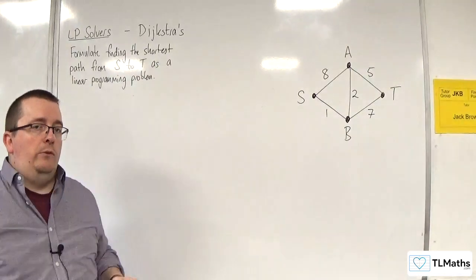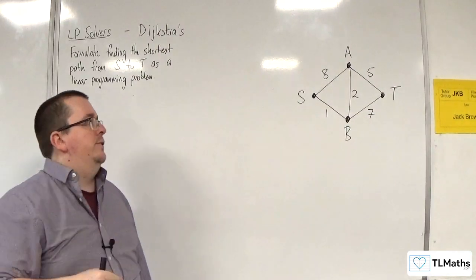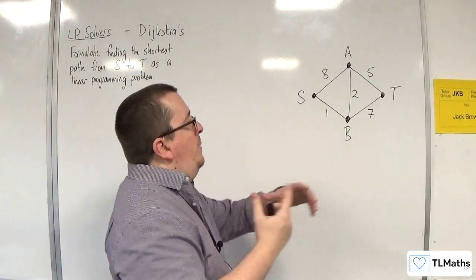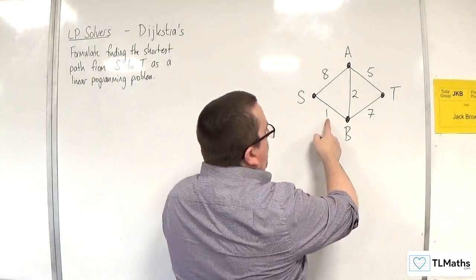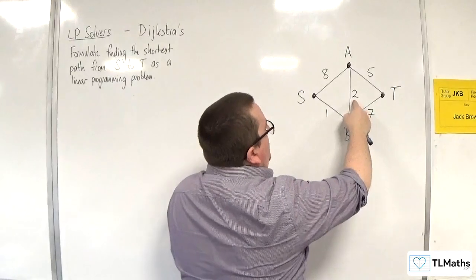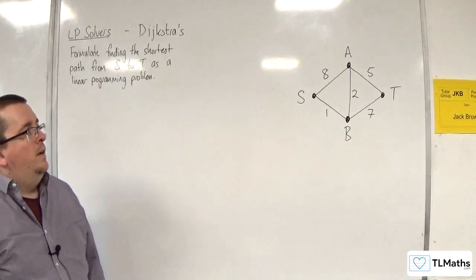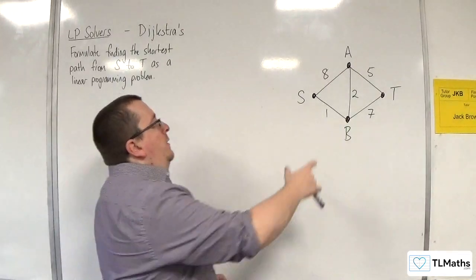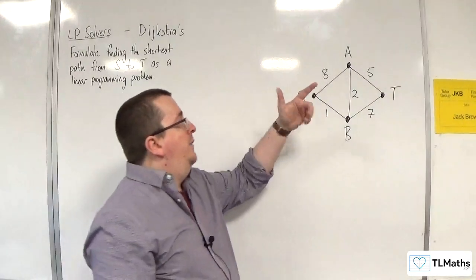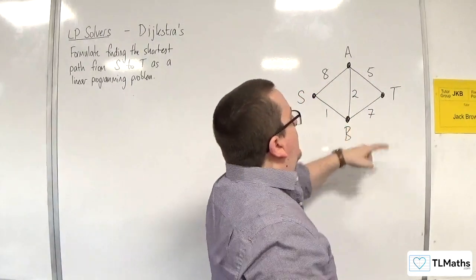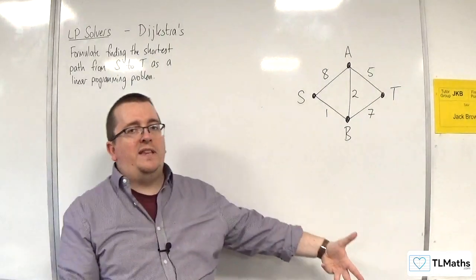Reminding ourselves from the previous video where we introduced indicator variables, those edges would be 1s, because I'm using those. So I would have 1 lot of 1, plus 2 lots of 1, plus 5 lots of 1, and that would be my minimum value. Whereas the other edges, S,A and B,T, weren't used, so I would have plus 8 lots of 0, plus 7 lots of 0. If they're not used, they get value 0; if they are used, they get value 1.